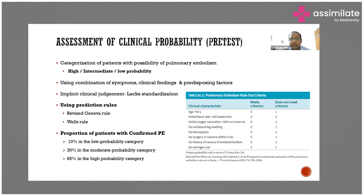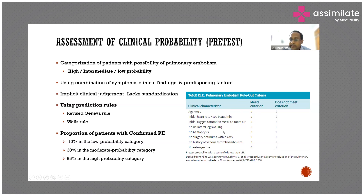Even after a patient is classified as low probability for pulmonary embolism, 10 percent of those patients may still have PE, so we should remain highly suspicious. At the same time, we should not perform CT pulmonary angiography and D-dimer for all patients. The pulmonary embolism rule-out criteria (PERC) is used: if PERC is zero and the clinician also assesses low probability, we likely do not need further testing.